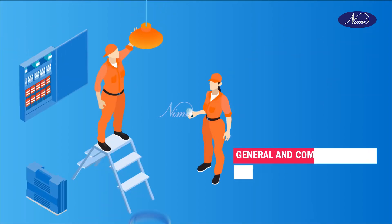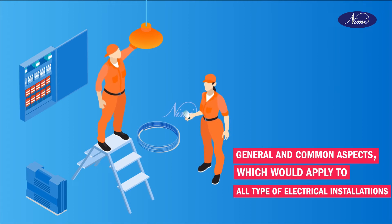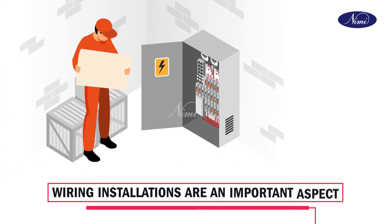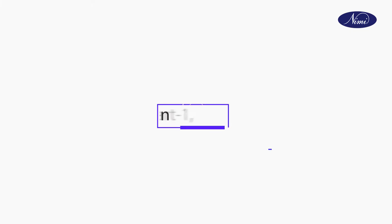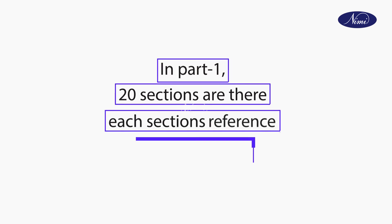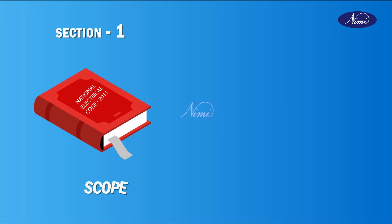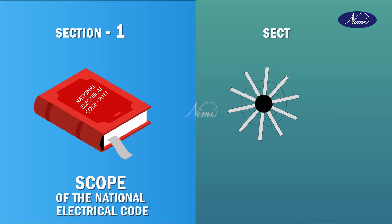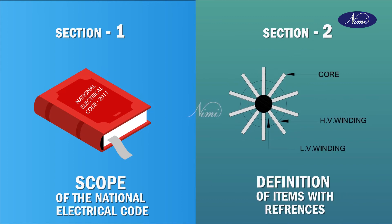Part 1 covers the general and common aspects which apply to all types of electrical installations. Wiring installations are an important aspect of any electrical installation. In Part 1 there are 20 sections. Section 1 of the code describes the scope of the National Electrical Code. Section 2 covers definitions of items with references.